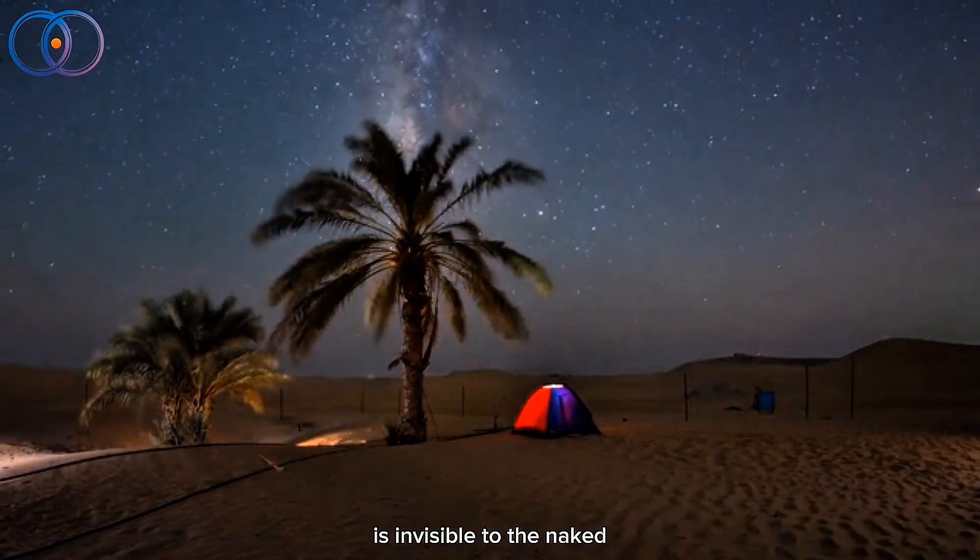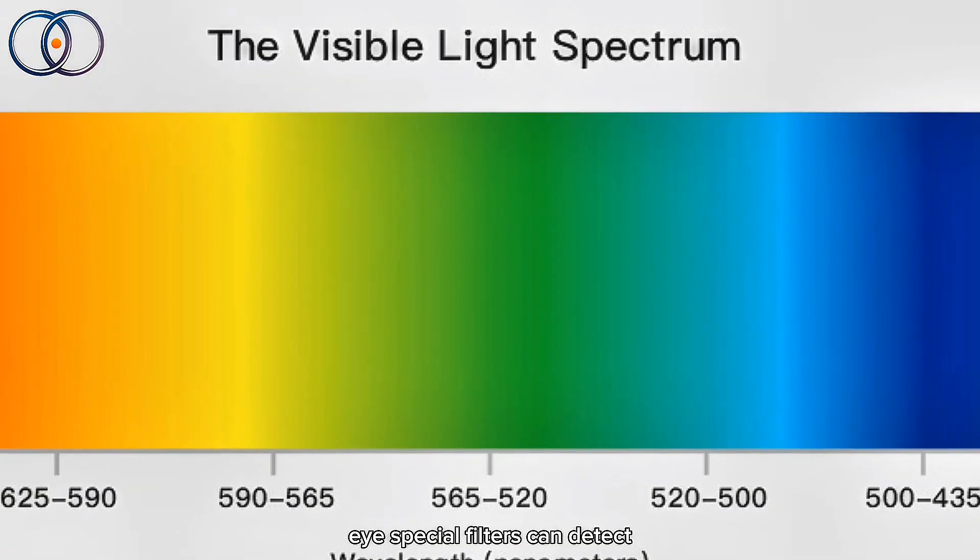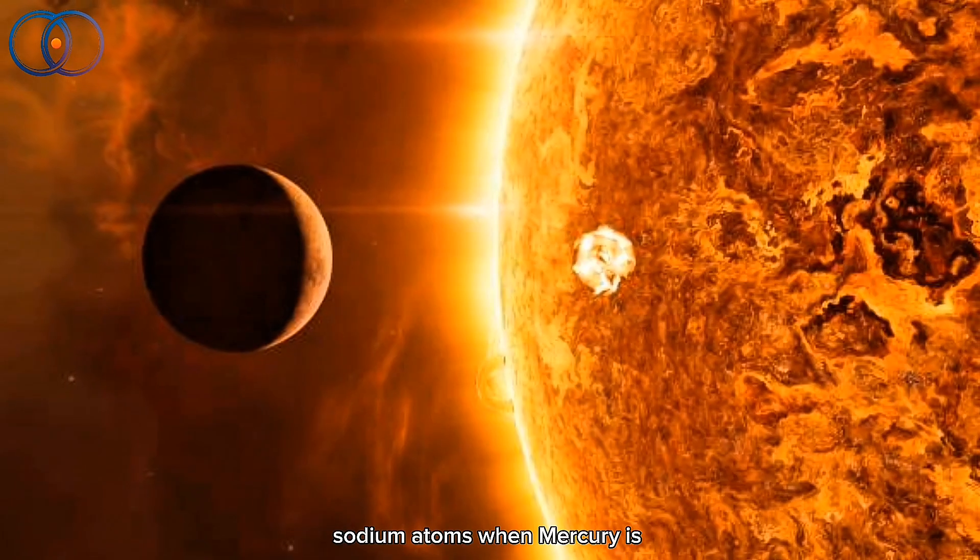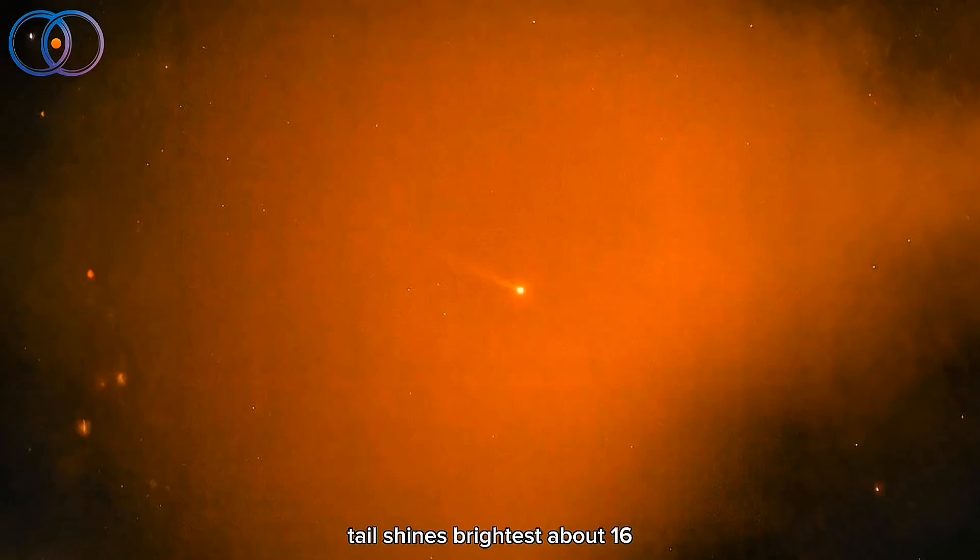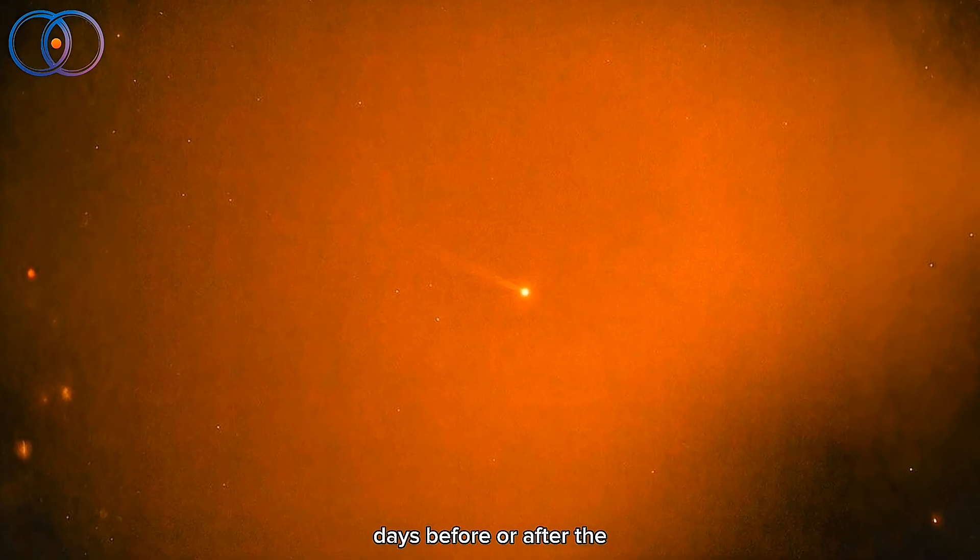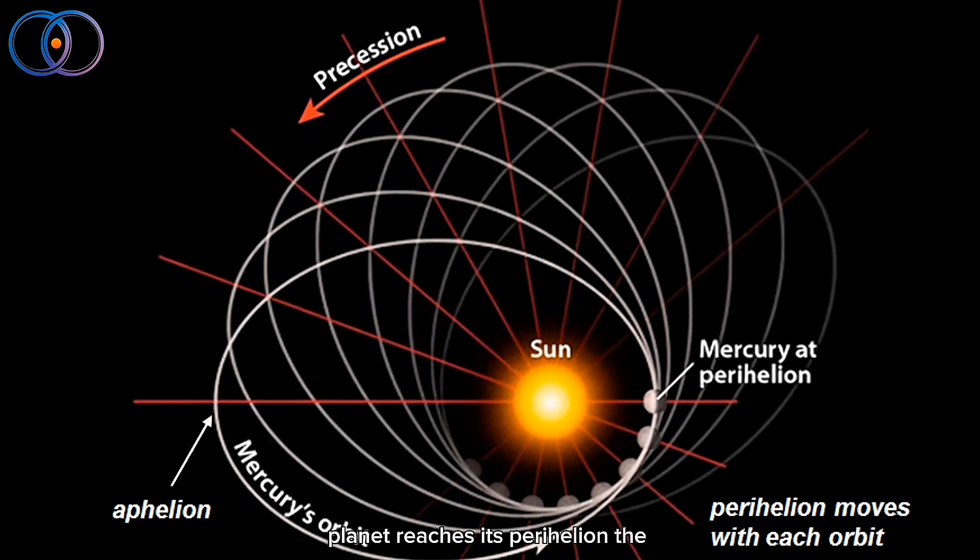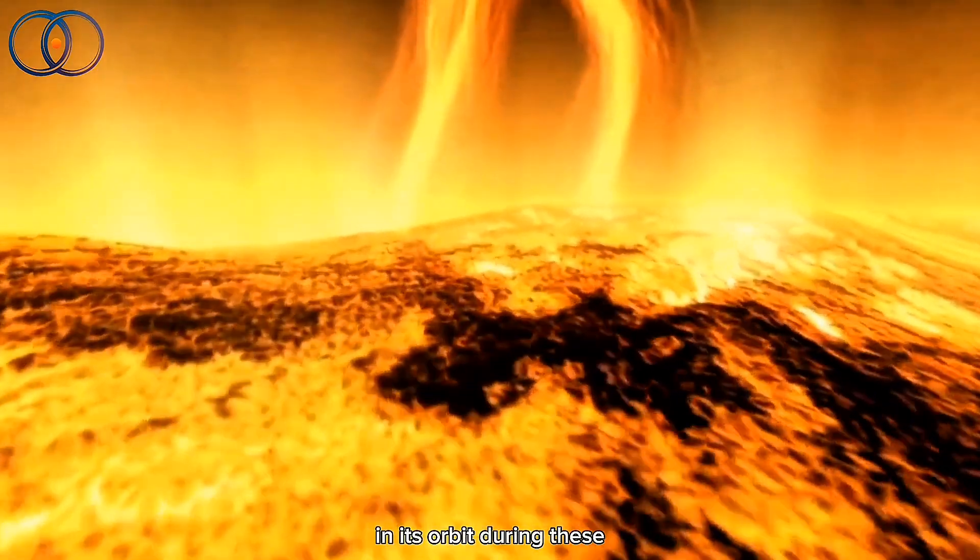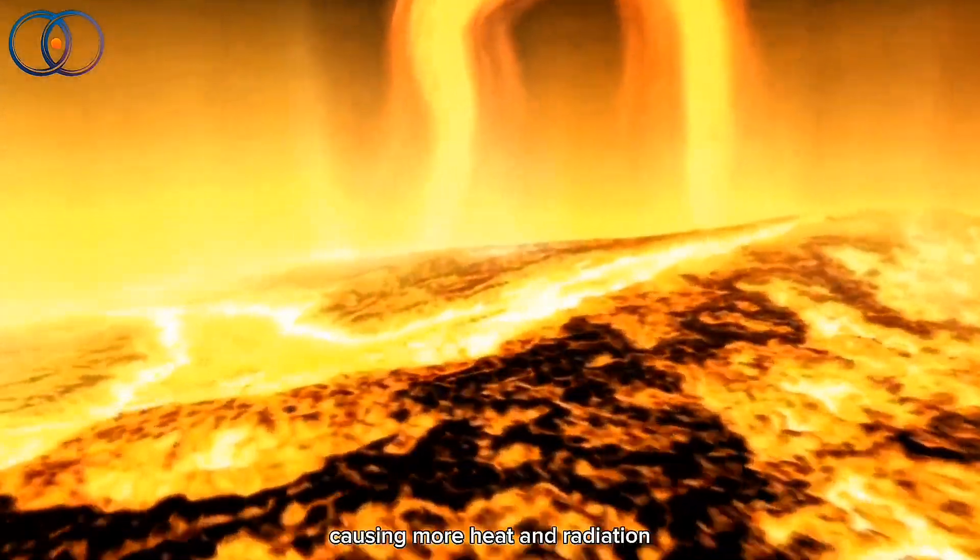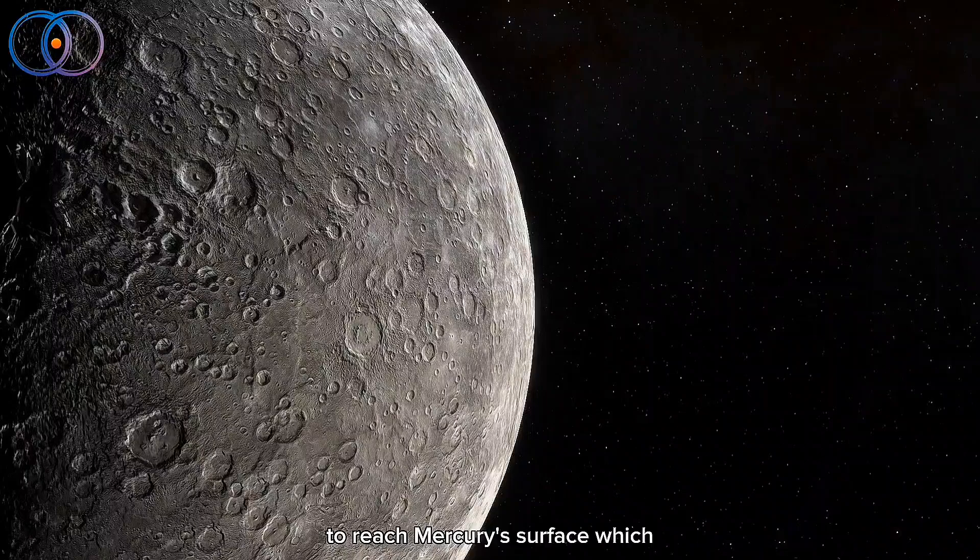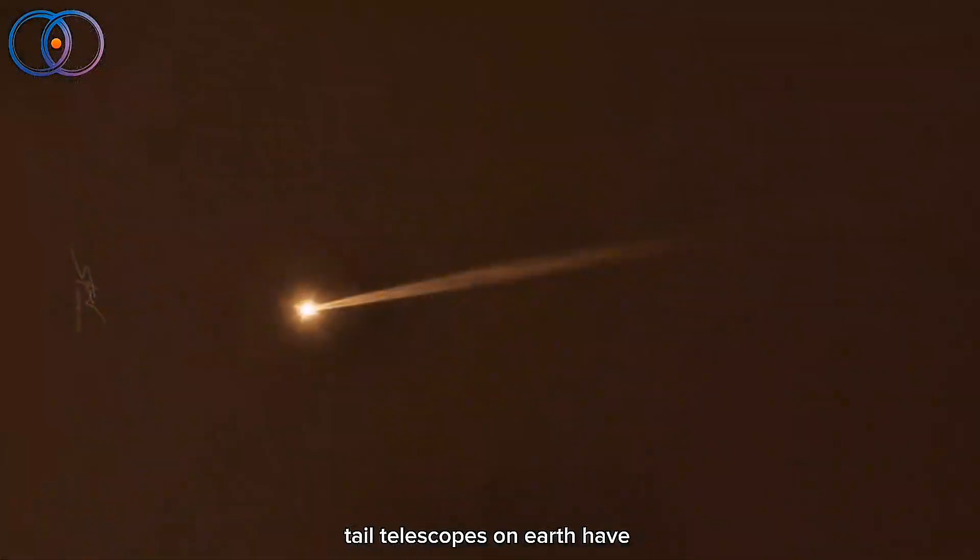While this tail is invisible to the naked eye, special filters can detect the light emitted by the sodium atoms. When Mercury is closest to the sun, the tail shines brightest, about 16 days before or after the planet reaches its perihelion, the closest point to the sun in its orbit. During these times, the sun's activity increases, causing more heat and radiation to reach Mercury's surface, which in turn enhances the sodium tail.